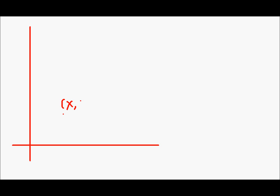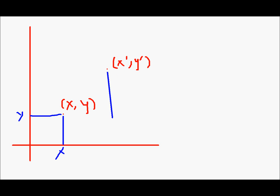So let's say this is my axis and I have a point over here whose coordinate positions are x and y, and I want to translate this point to a new position x', y'. So this is x, this is y, this will be x', and this will be y'.